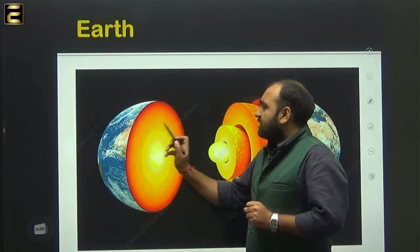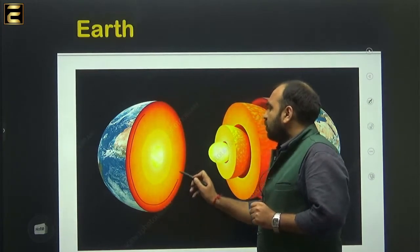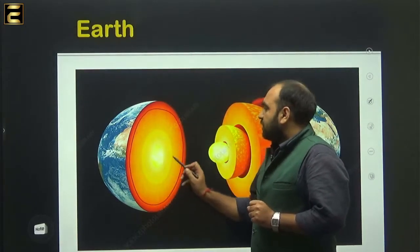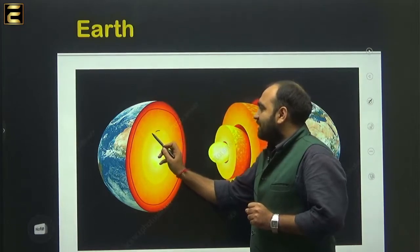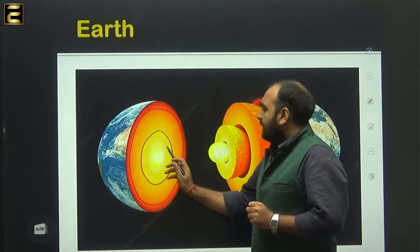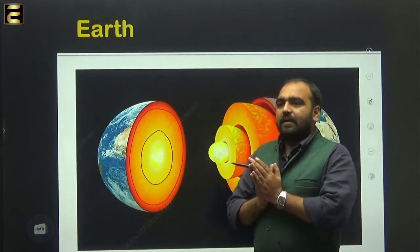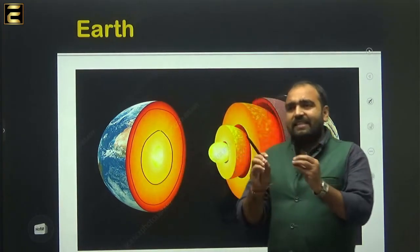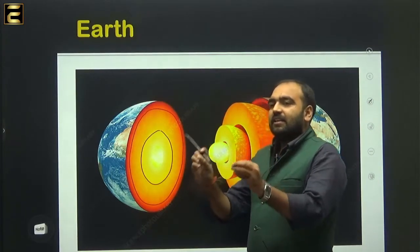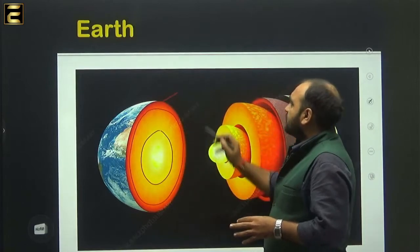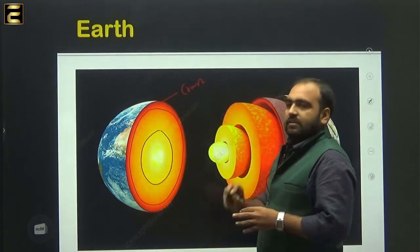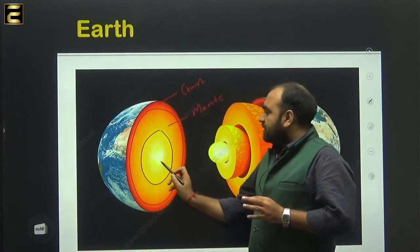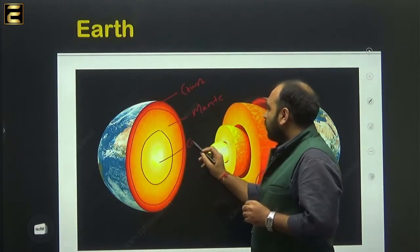Just below this crust, this part is known as the mantle — the dark yellow part you can see here. And the interior central part of the earth is called the core. So from this picture you can easily understand: the uppermost layer is known as crust, the intermediate part is known as mantle, and the central part is known as core.